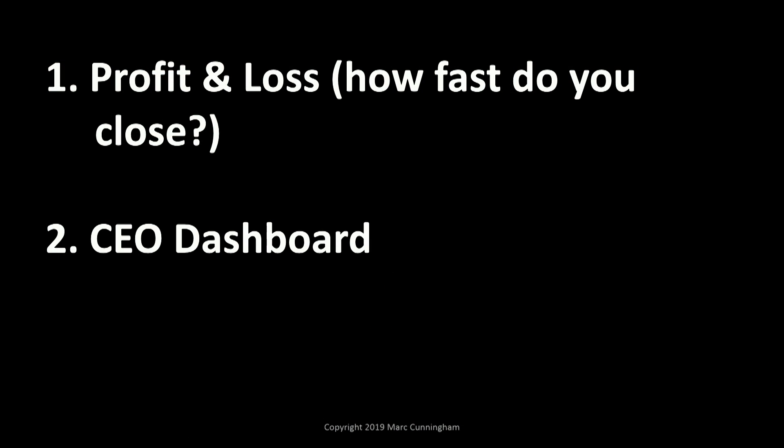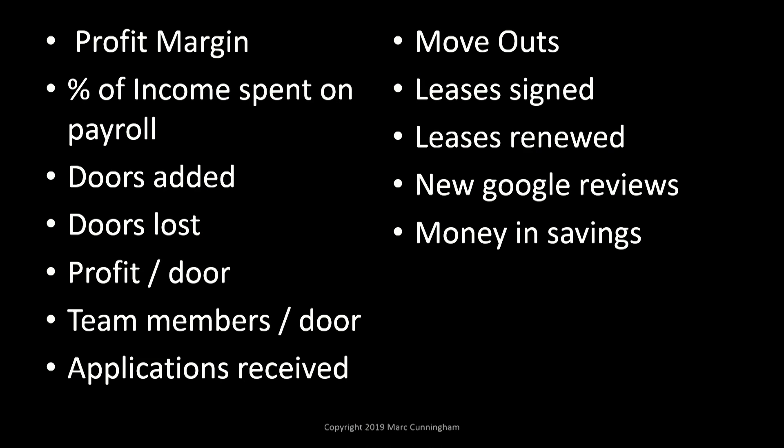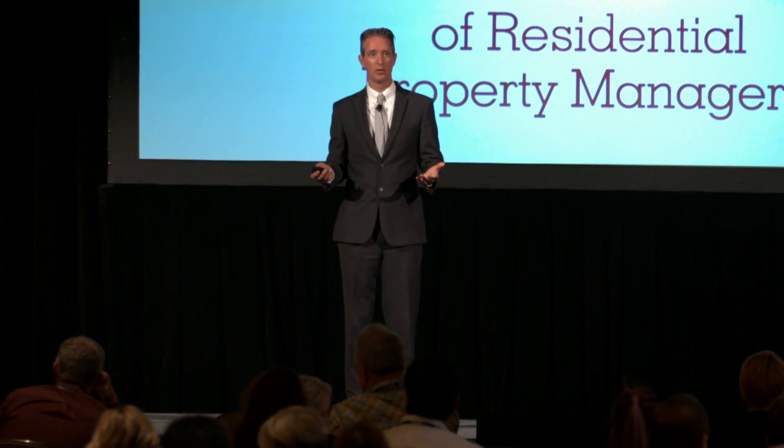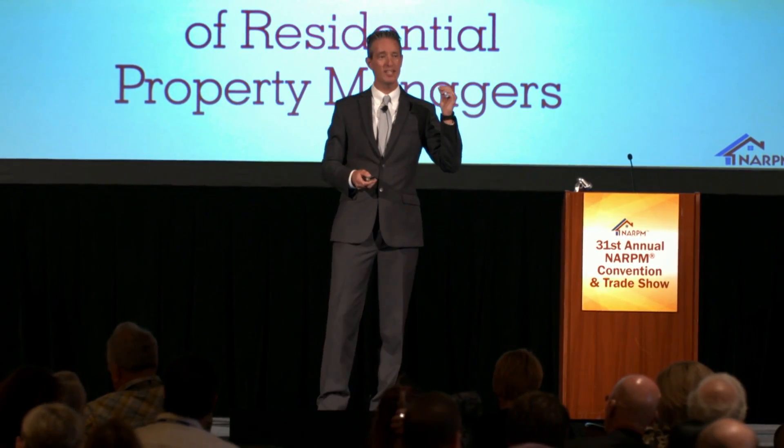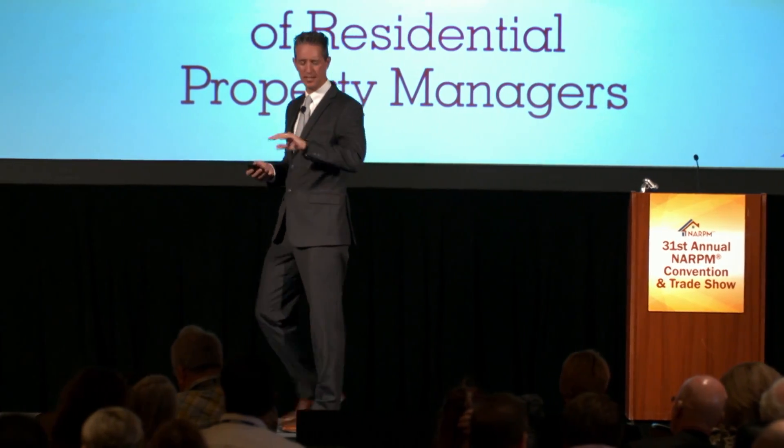Number two is what we call a CEO dashboard. This is where we pull data from all over the company and put it onto a spreadsheet — all sorts of data. For example, it's going to calculate our profit margin, our percentage of income spent on payroll, how many doors we added that month, how many doors we lost, what's our profit per door, how many team members per door, how many applications received, how many move-outs, leases signed. The beautiful thing is we're not just looking at a snapshot — we're looking for trends across months. So I can see, uh-oh, we're getting fewer and fewer leases signed over the last four months — is that a trend? Or, our leasing fees are going up every month. You need to have a document like this, and it doesn't need to be rocket science, but you should be pulling this data regularly.